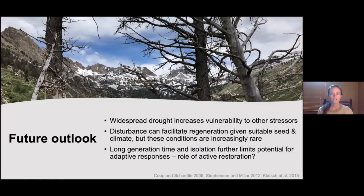All of these compounding stressors interact, leading to increasing forest vulnerability, so adult tree mortality is coupled with decreasing opportunities for establishment. Long generation times and population isolation further limit potential migratory or adaptive responses to these changes. So there may be an increasingly important role of management and restoration in the future. Given these potential declines and rare opportunities for establishment, we wanted to better understand the regeneration niche of these species and how different disturbances might influence natural regeneration.